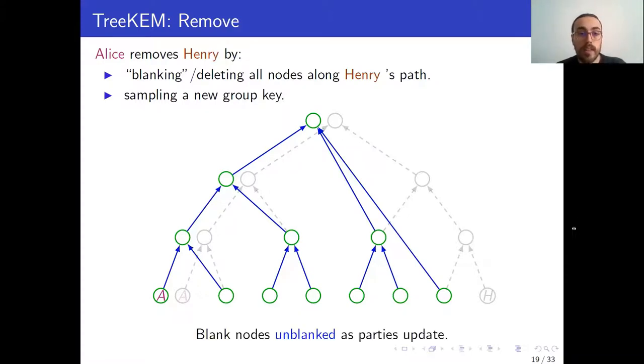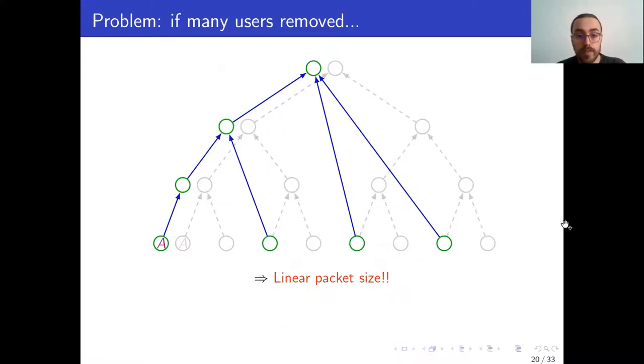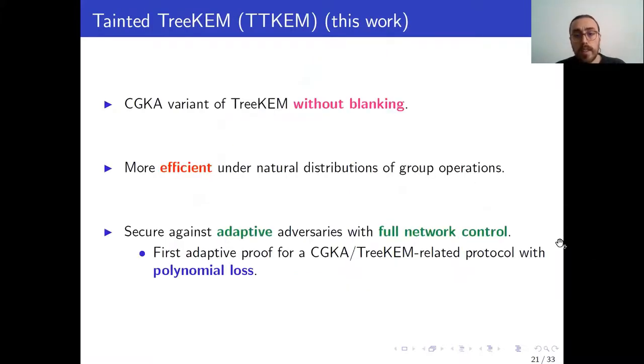The problem, however, is that if we do remove a lot of users, we will create a lot of blanks, and it could be that a given update, for example, this one from Alice here, needs to be encrypted individually to all the leaf nodes, which, of course, brings back this linear communication cost which we were trying to avoid.